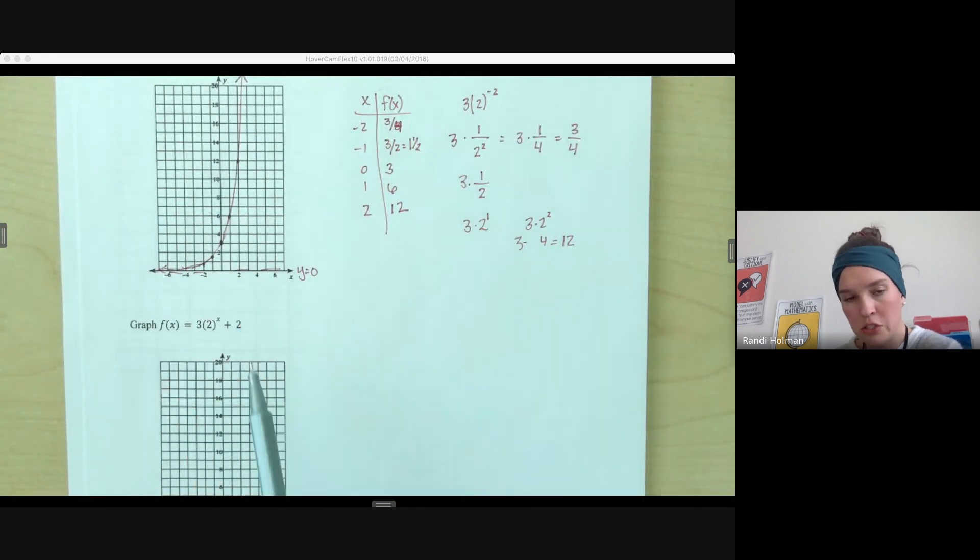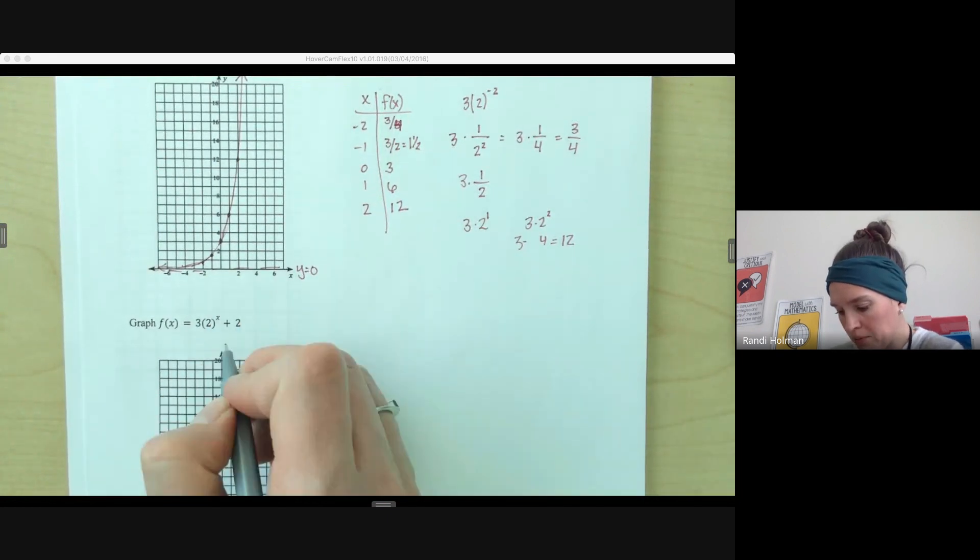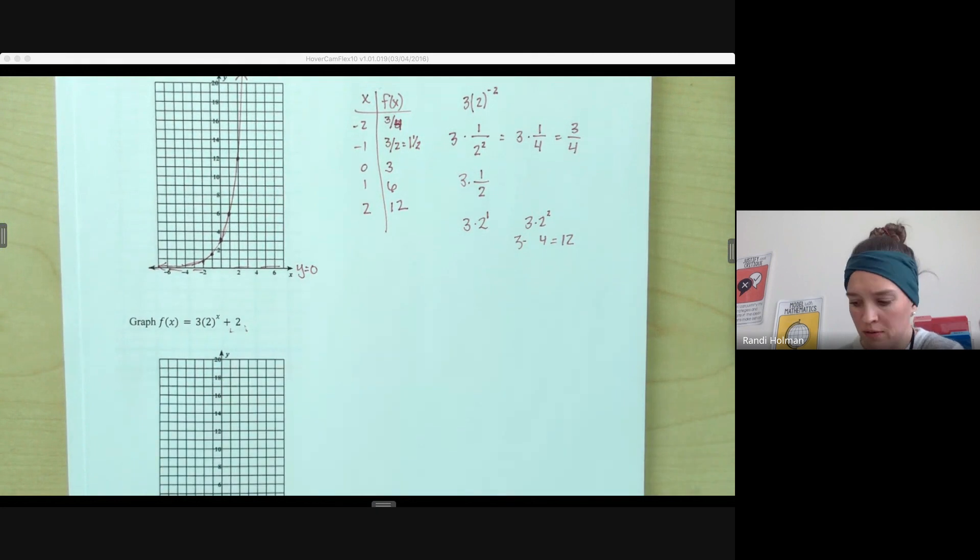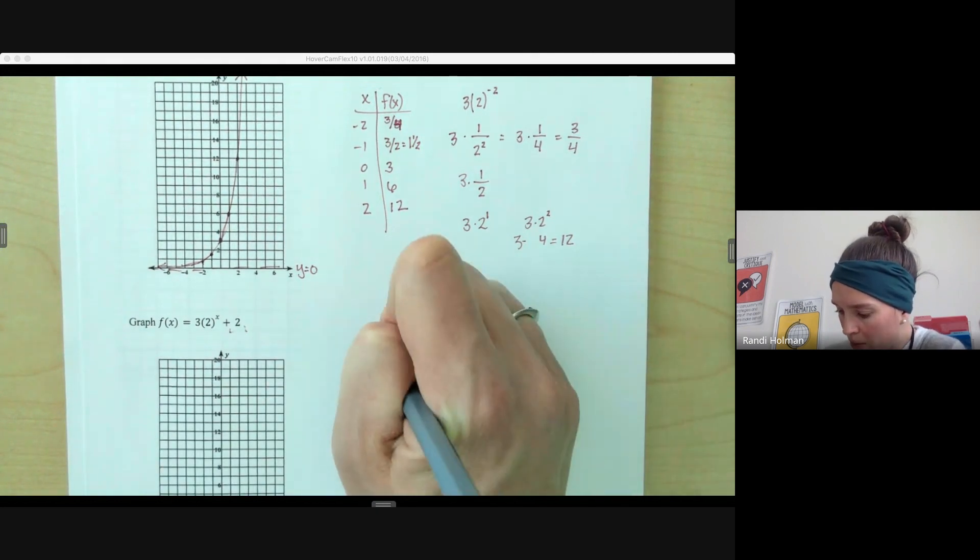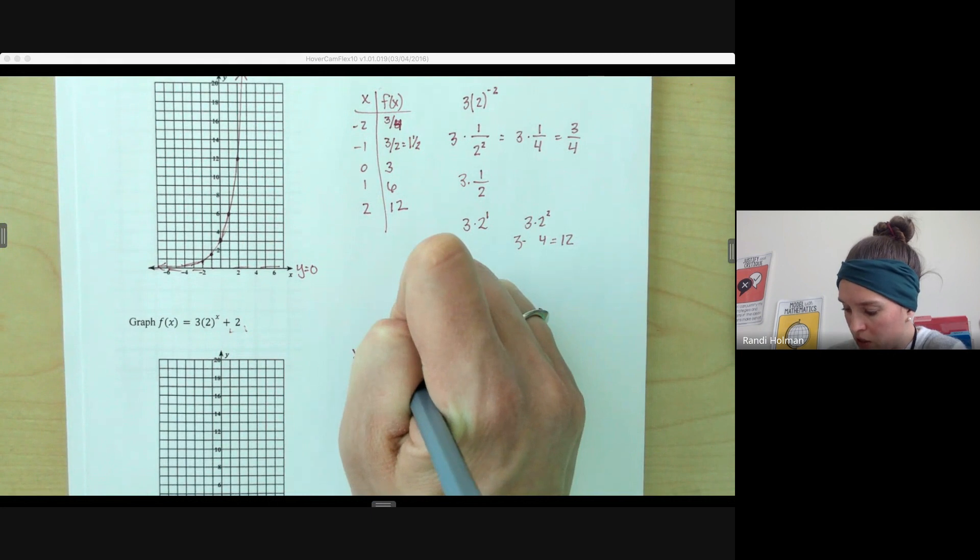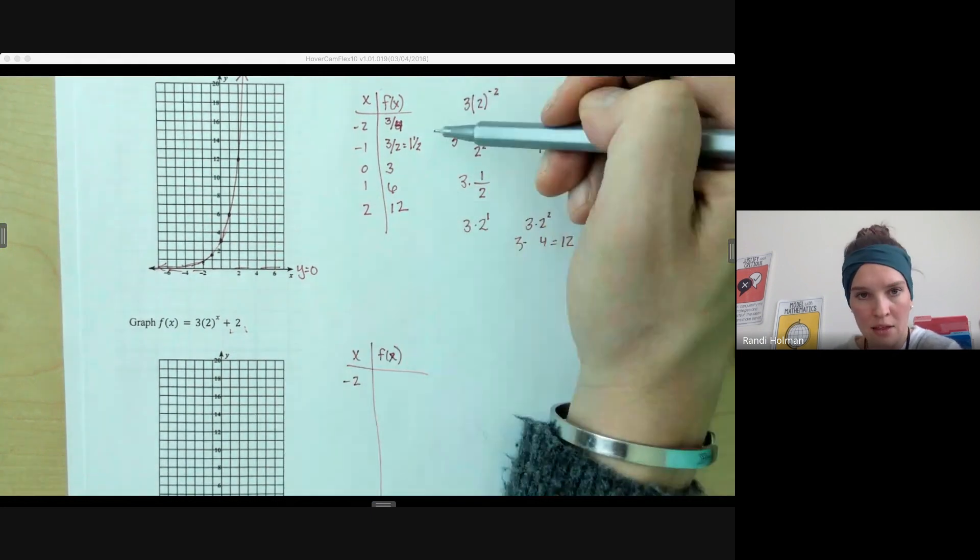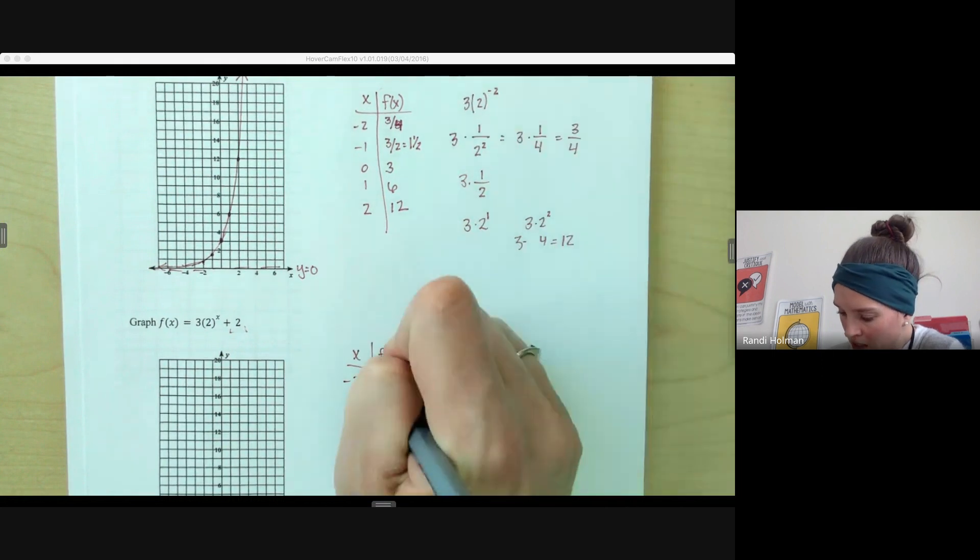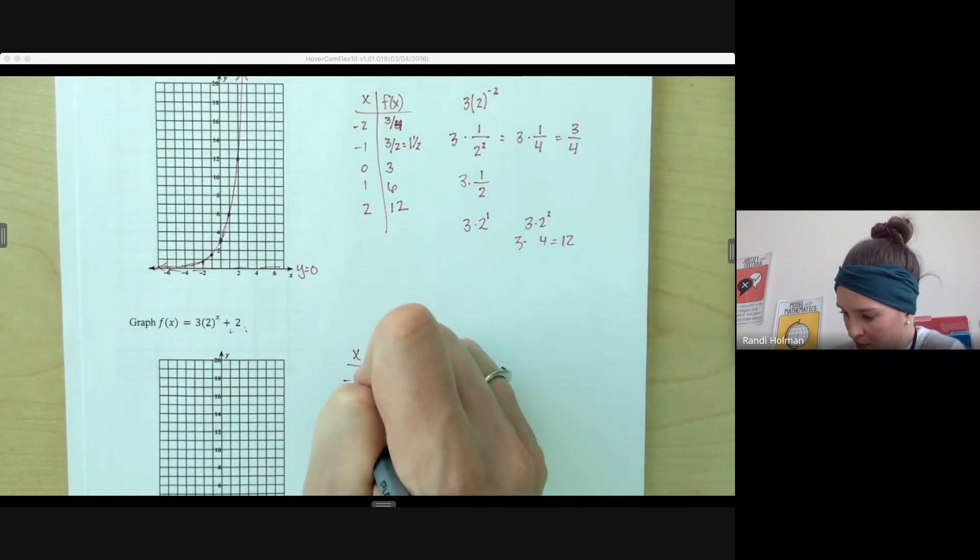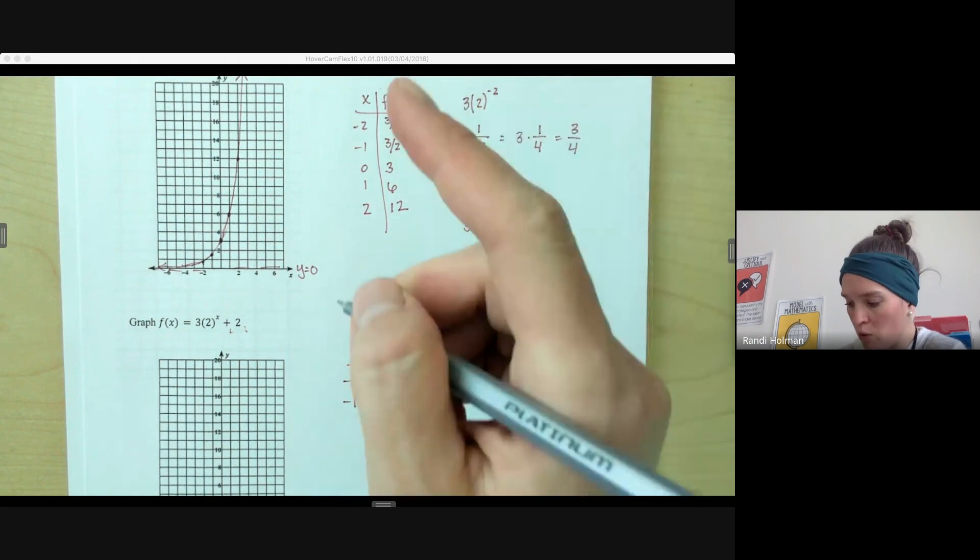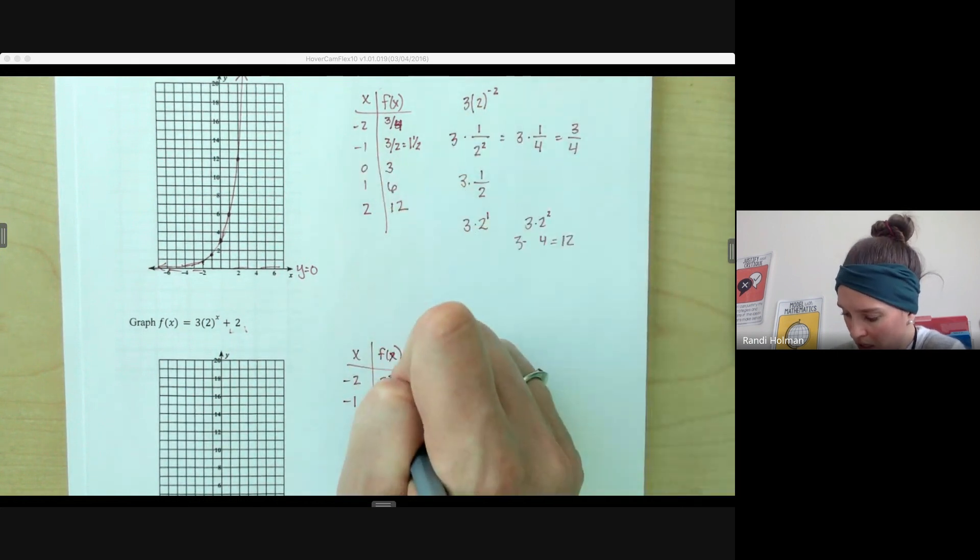So that's the only difference in these two functions is this extra plus 2. So we'd still do all of the same things for our points. But then we are just going to add 2 to all of our y values. So instead of being at 3 fourths, we're going to be at 2 and 3 fourths. Instead of being at 1 1/2, we're going to be 1 1/2 plus 2, so 3 1/2.